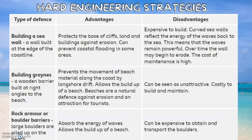Hard Engineering Strategies. The first is building a sea wall — a wall built at the edge of the coastline. This aims to protect the base of cliffs, land and buildings against erosion, and can also prevent coastal flooding in some areas. However, this is expensive to build, and curved sea walls reflect the energy of the waves back onto the sea, meaning the waves remain very powerful. Over time, the wall may begin to erode and the cost of maintenance is very high.